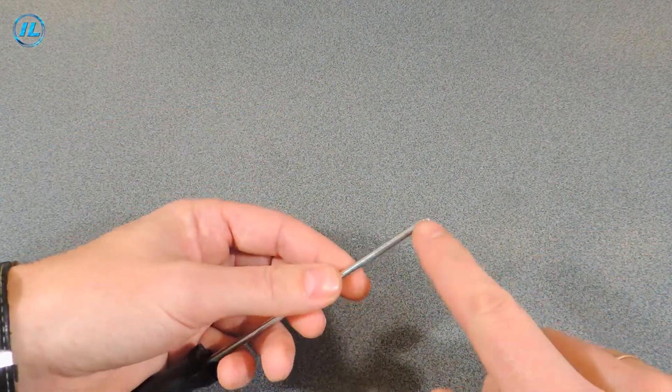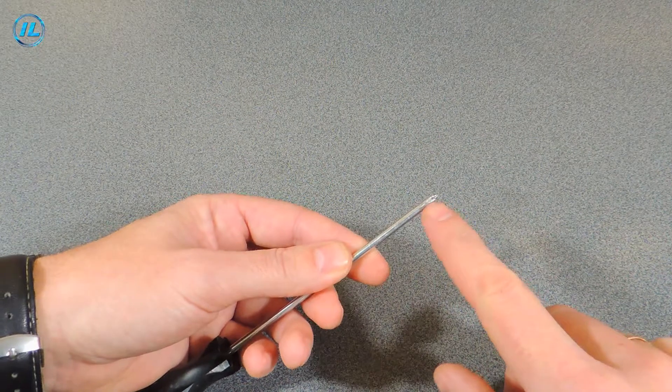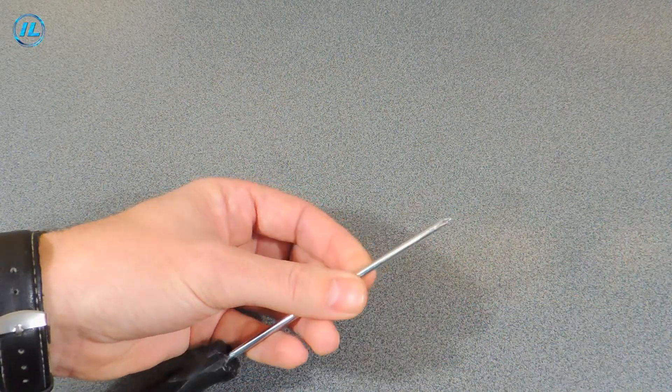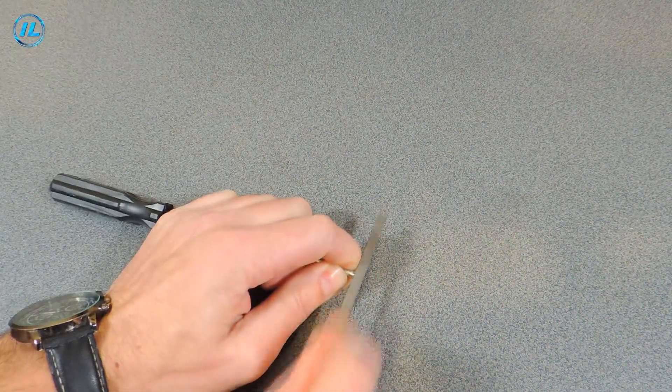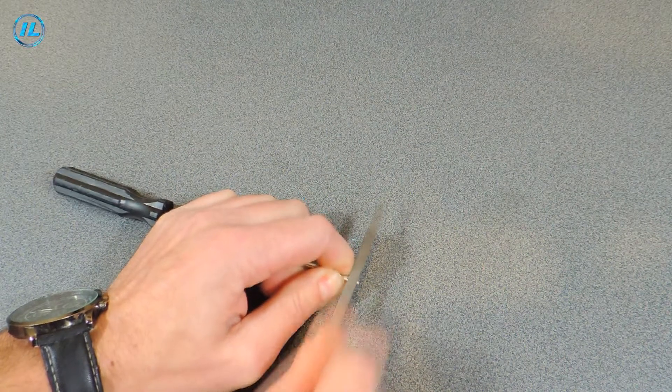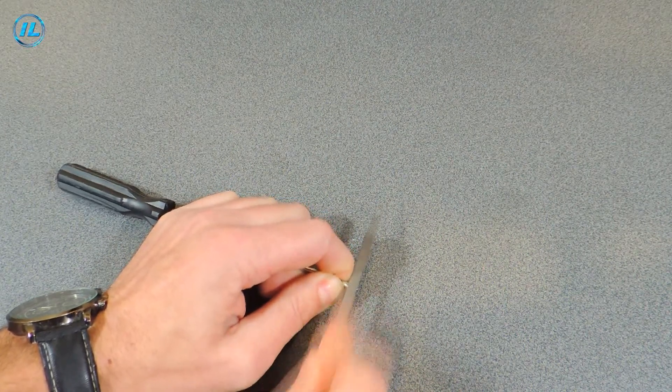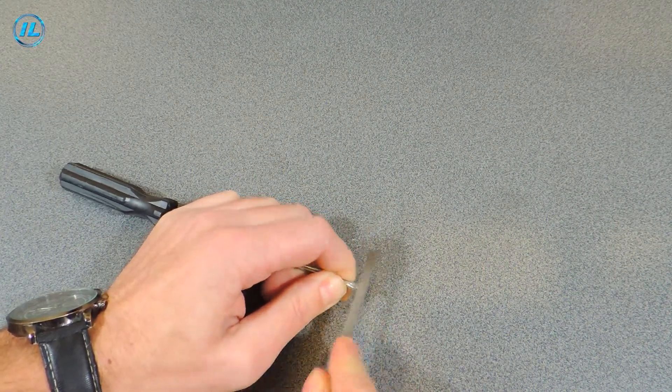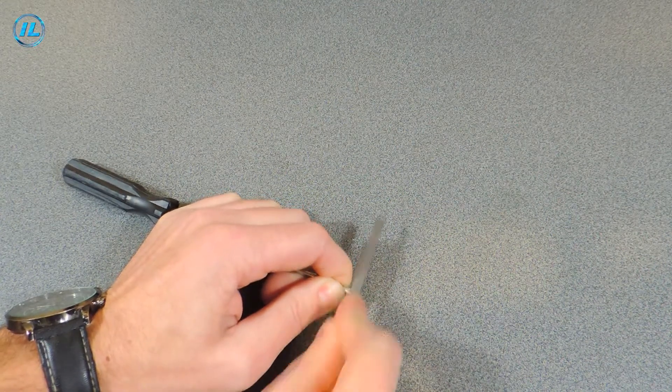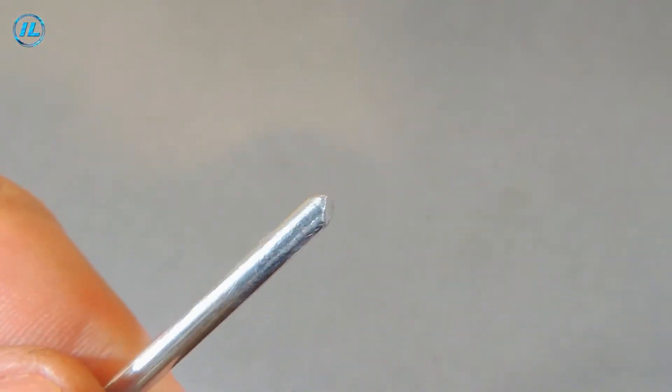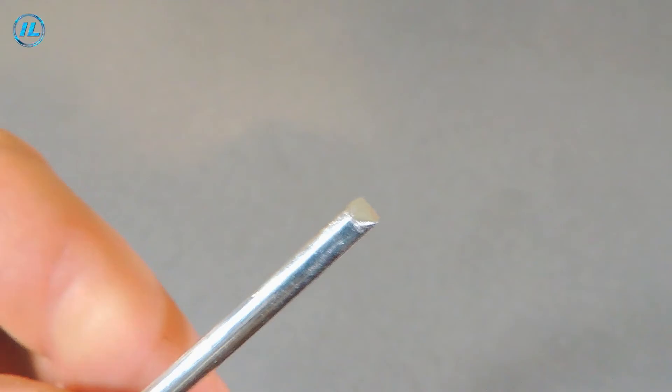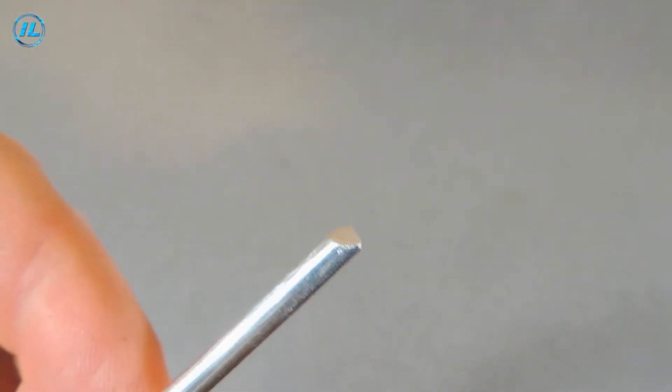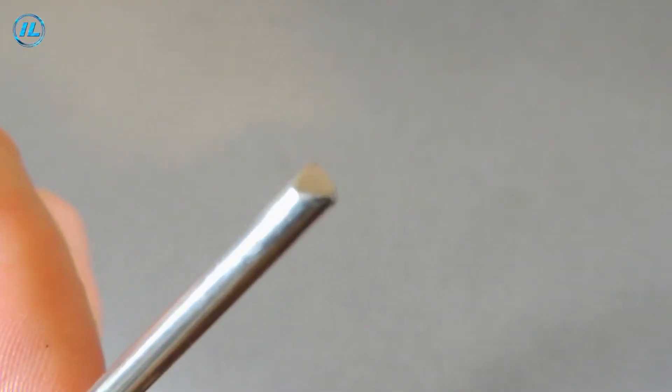First of all, I will process the edge of the screwdriver so that it looks like a soldering iron rod. As a result, the rod became like this.